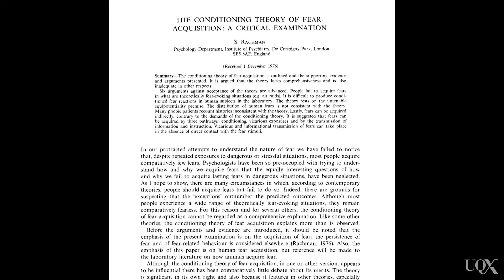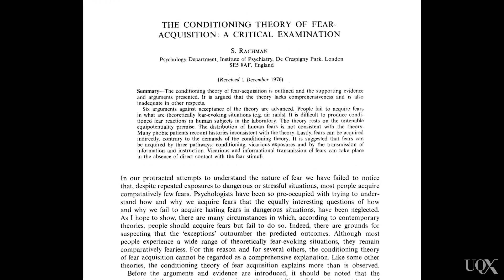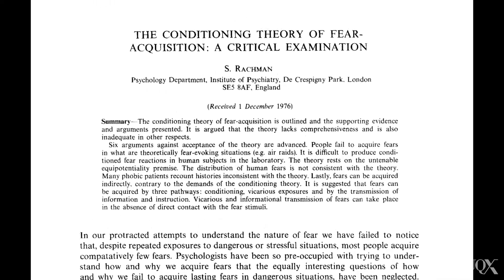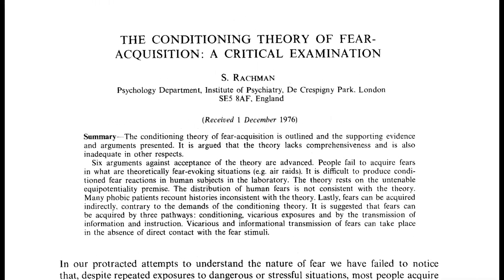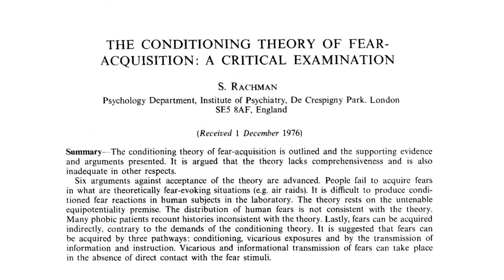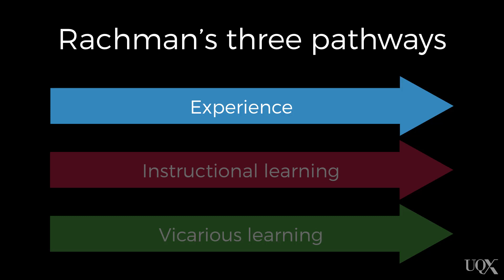If we think about the etiology of anxiety disorders from a cognitive behavioural perspective, the behavioural component is very much informed by Stanley Rachman's work published in 1977. Rachman proposed three pathways through which people might develop fear. The first is through their own direct experience, which may become generalised through conditioning.